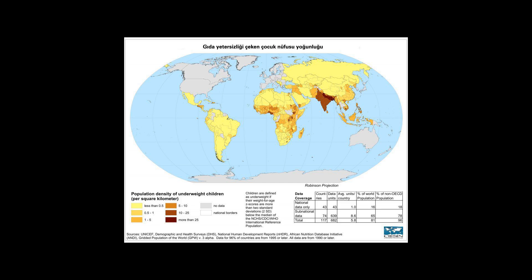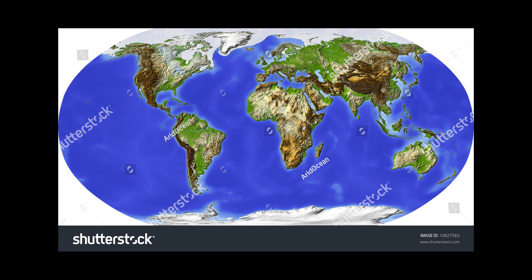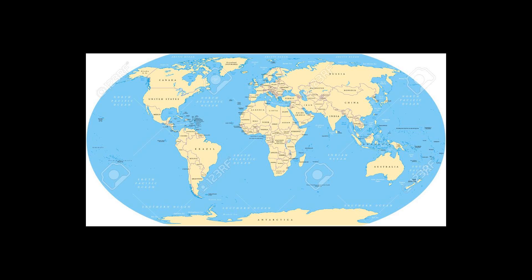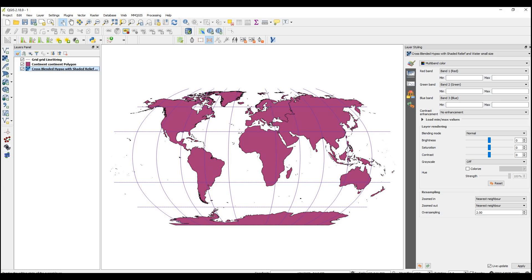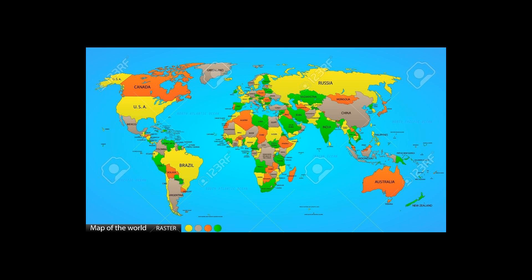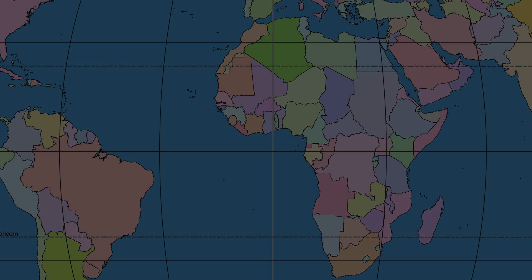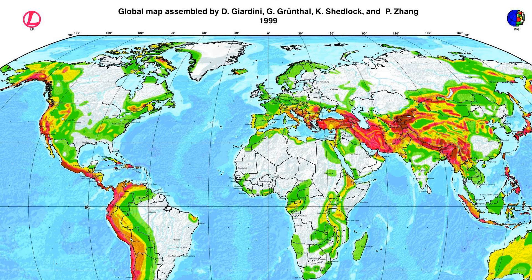Formulation: The projection is defined by a table indexed by latitude at 5-degree intervals. Intermediate values are calculated using interpolation. Robinson did not specify any particular interpolation method, but it is reported that he used 8-point interpolation himself. The plen column is the length of the parallel of latitude, and the pdfe column is multiplied by 0.5072 to obtain the distance of that parallel from the equator. Meridians of longitude are equally spaced on each parallel of latitude.